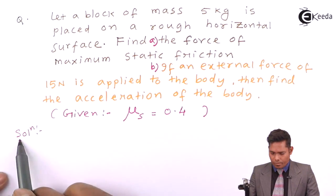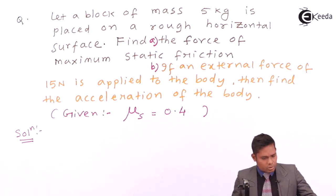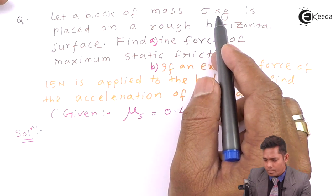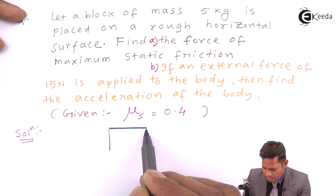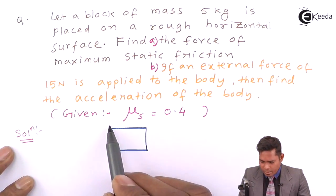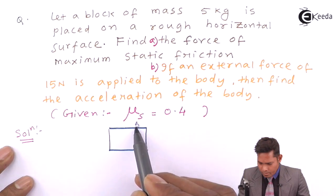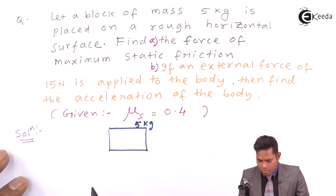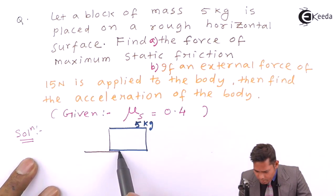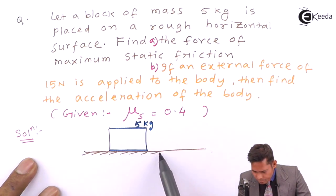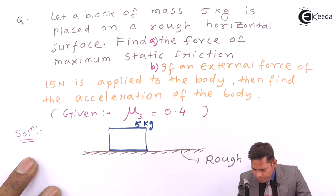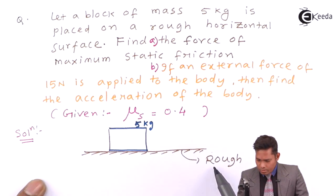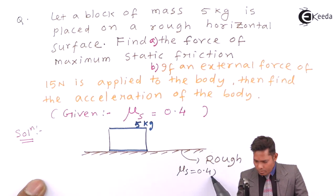Let us understand the question. There is a block of mass 5 kg placed on a rough horizontal surface. The coefficient of static friction mu s for this surface is 0.4. This is given to us.